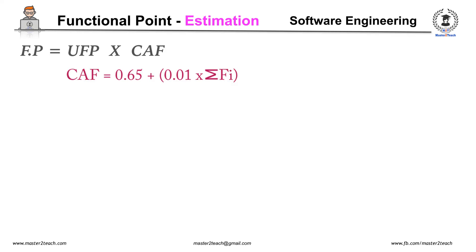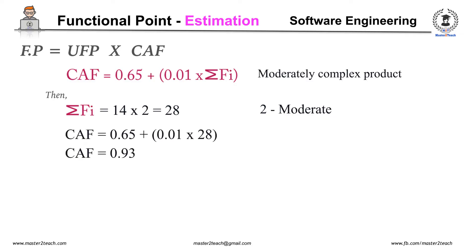Now moving to calculate CAF. As we know, CAF is equal to 0.65 plus 0.01 times summation Fi. Let's calculate for a moderately complex product. Then summation Fi equals 14 times 2 equals 28, because all 14 questions are answered in the moderate form which is equal to 2. So 14 times 2 equals 28. CAF equals 0.93.